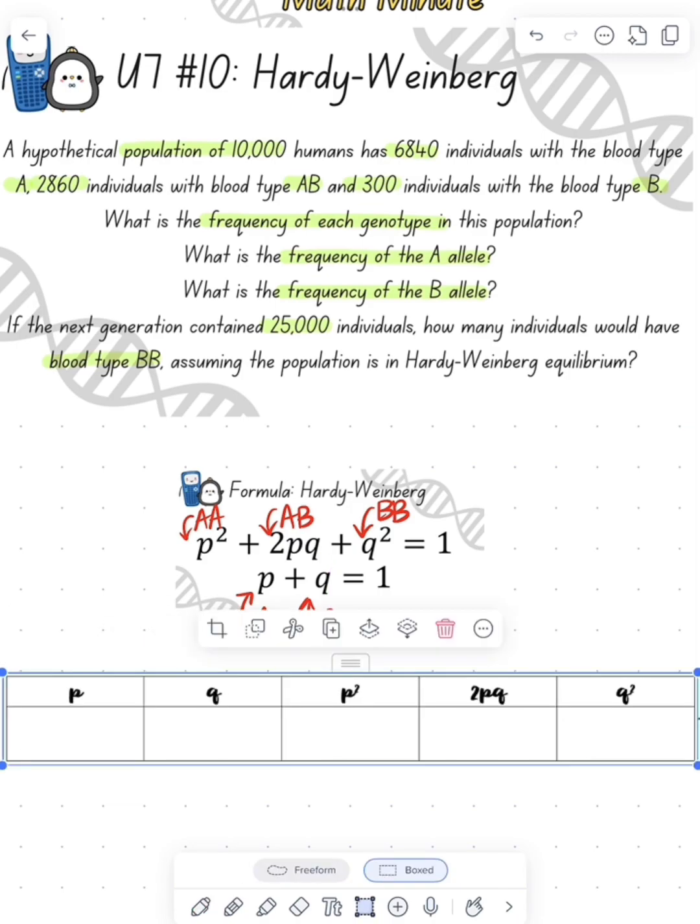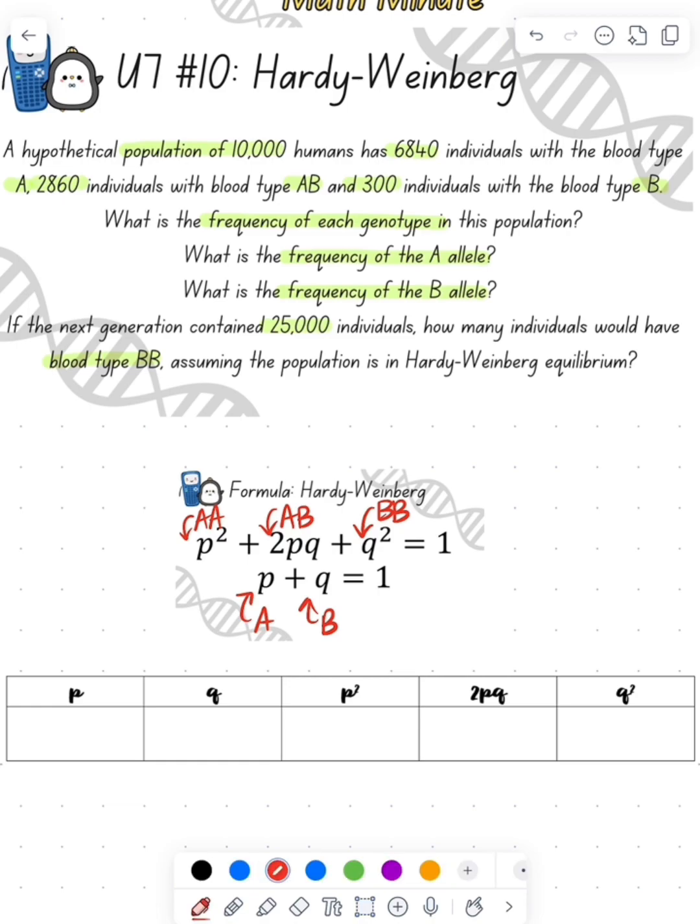Now I always use this little chart whenever I solve it, and we want to start always with Q squared. So I see that there are 300 individuals that are going to have type B blood out of a total population of 10,000 individuals.